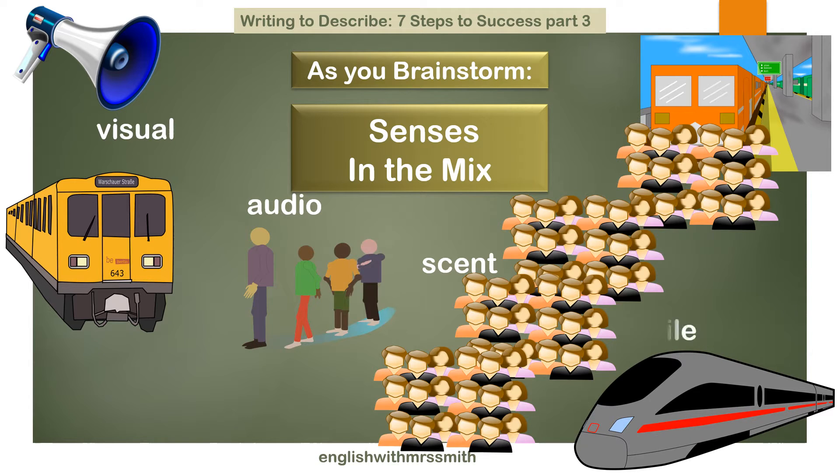An invaluable ingredient in good descriptive writing is figurative language. We could be talking about symbolism, onomatopoeia, hyperbole, oxymoron, but more likely personification, alliteration — which you may have spotted in previous slides — and especially simile and metaphor. Those are the two aspects we are going to focus on.